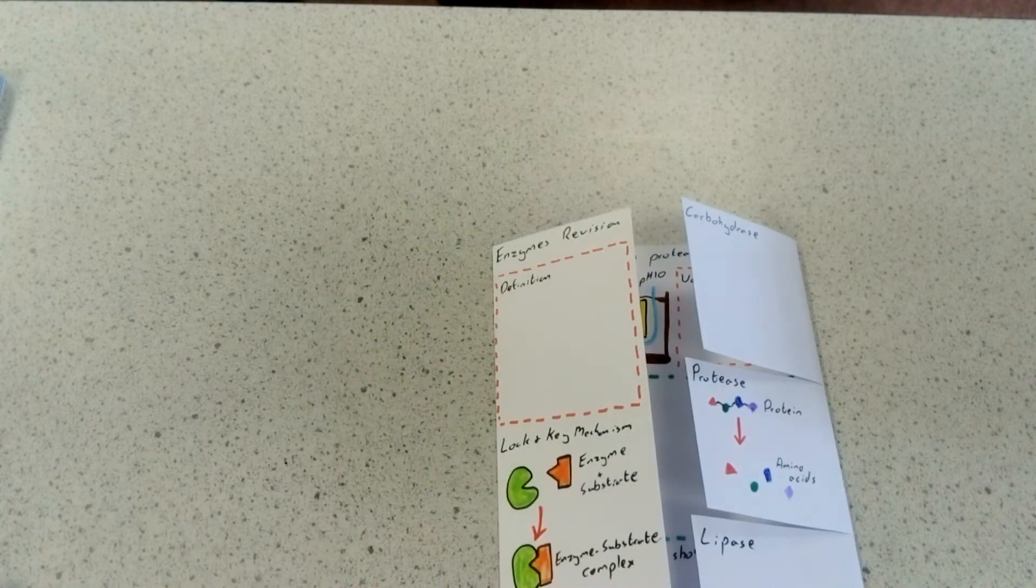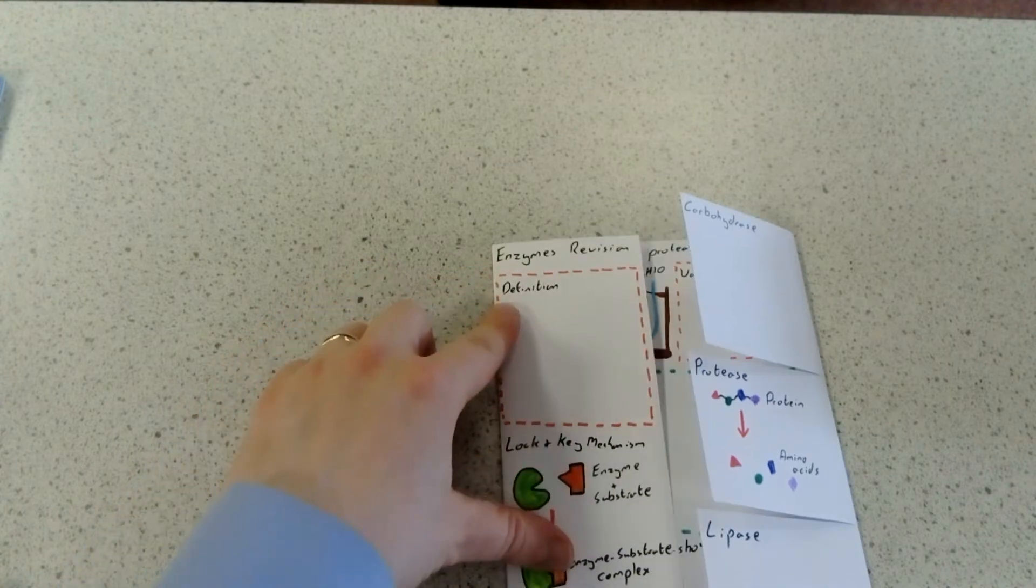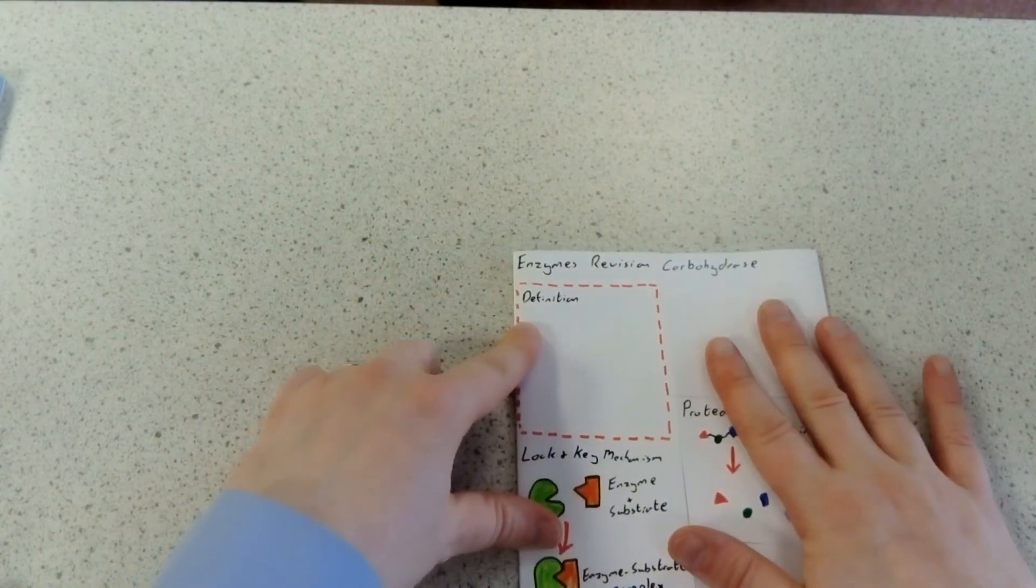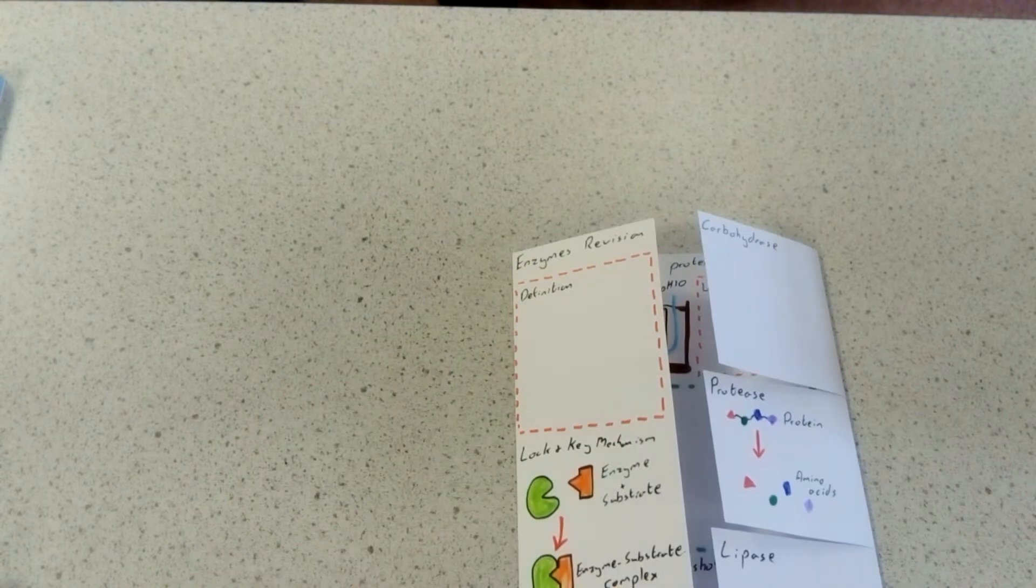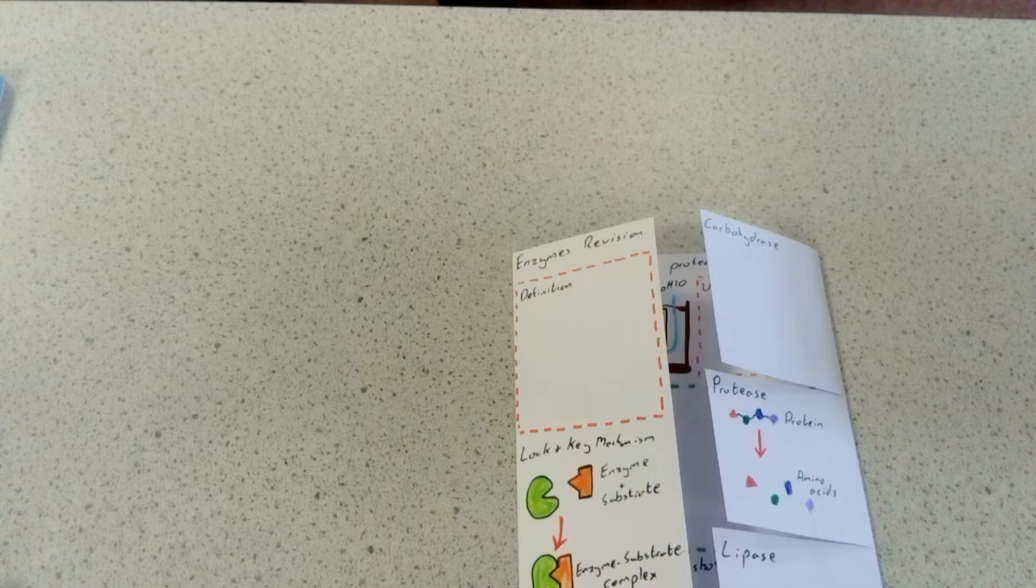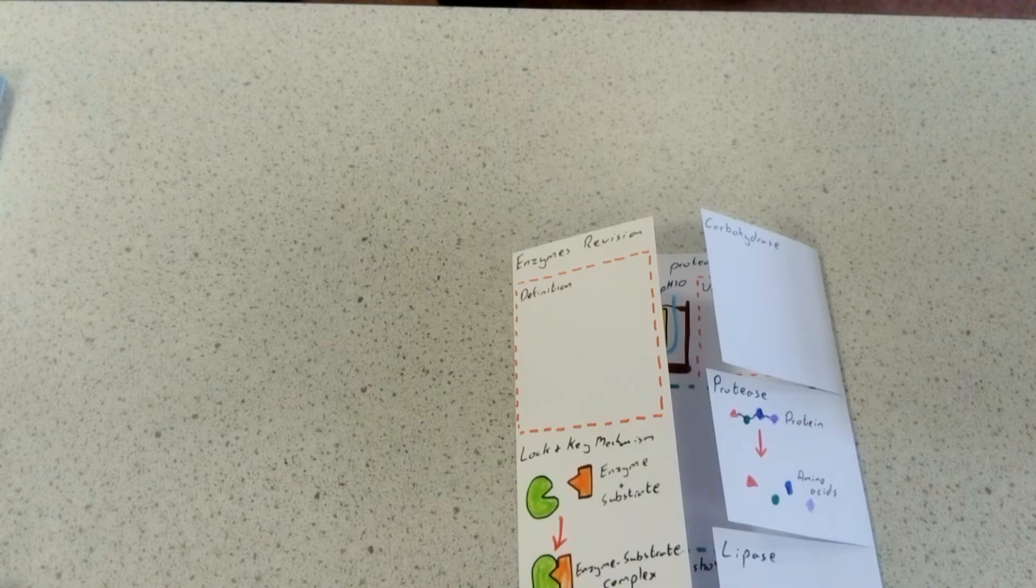Don't spend more than 20 seconds writing 'Enzymes Revision'—you'll get no marks in an exam for a pretty title. Underneath, write a definition of what enzymes do. Key things to remember: enzymes are biological catalysts that speed up reactions by lowering activation energy. That definition must contain three key things.